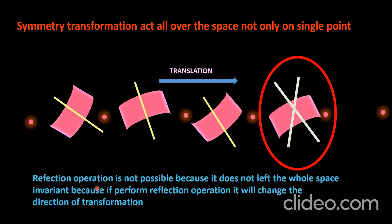Reflection operation is not possible here because it does not leave the whole space invariant. If we perform the reflection operation, it changes the direction of transformation — it will not act along the same line. So it does not leave the whole space invariant, does not act all over the space, and does not fulfill the basic rule of symmetry transformation.